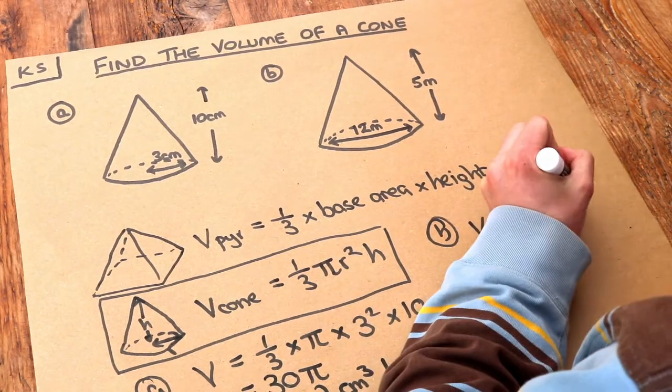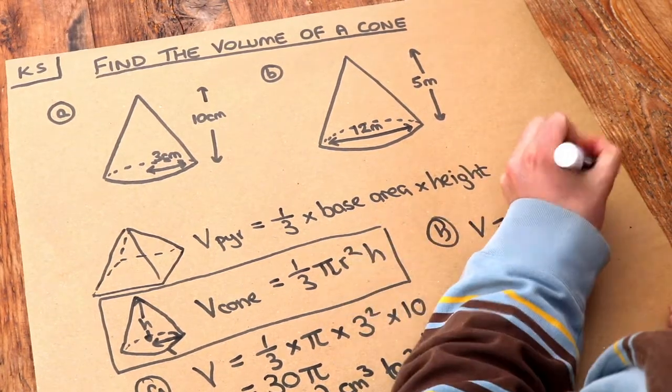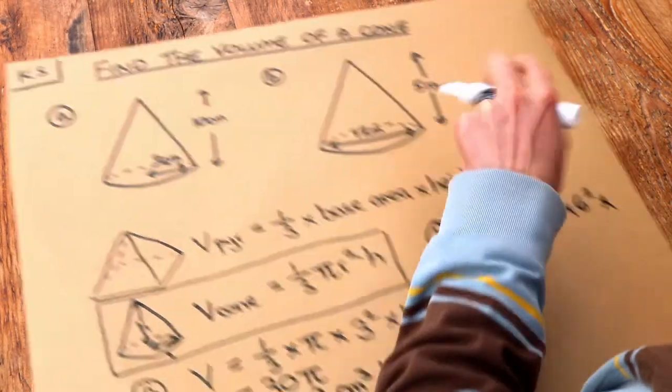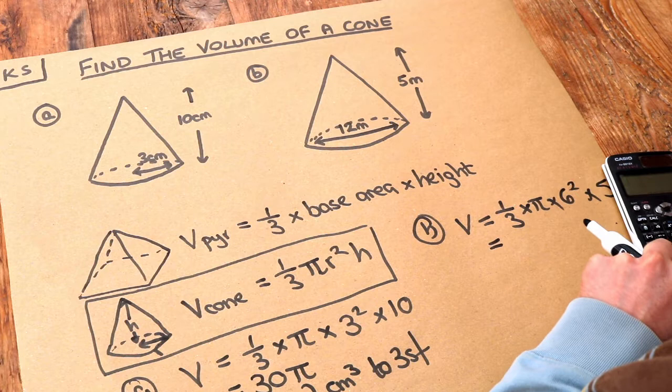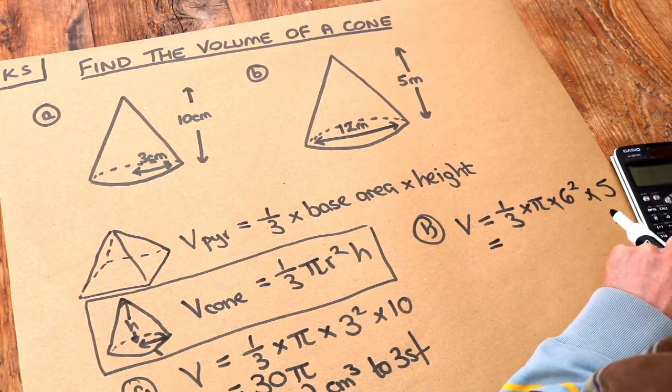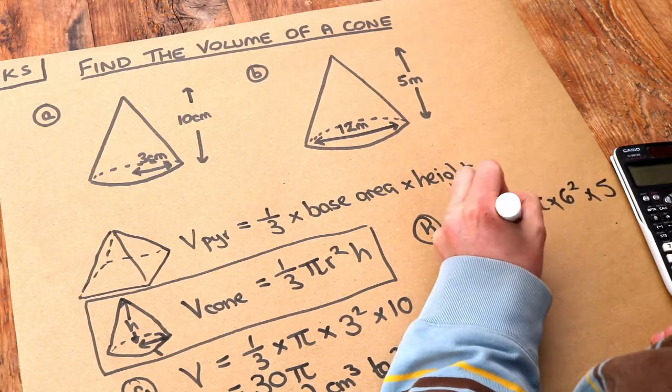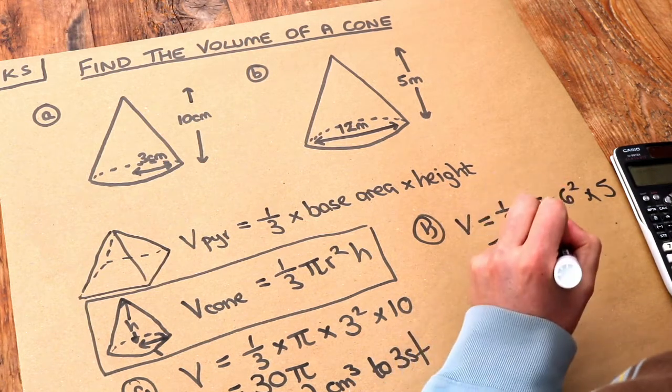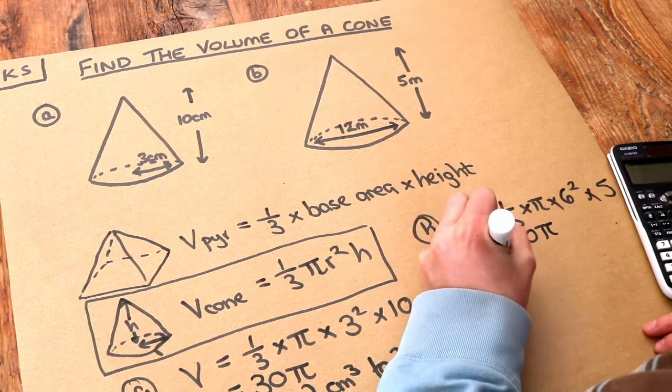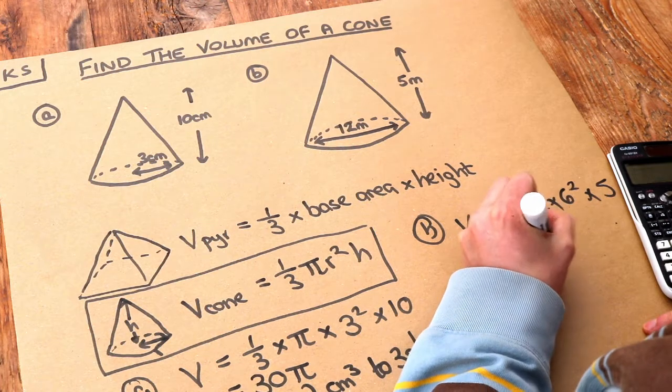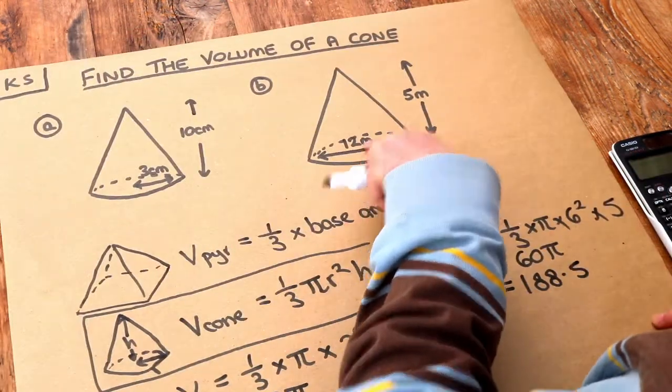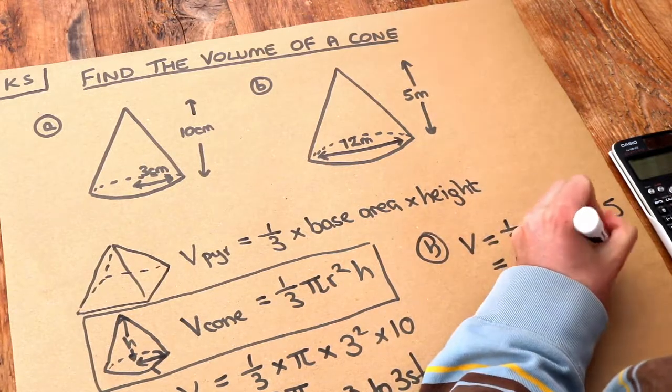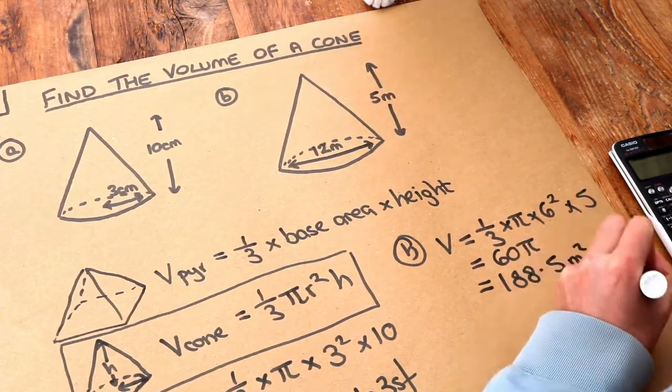do that on our calculator: a third times π times 6² times 5 equals 60π, or as a decimal, if you press the S⇔D key, 188.5 to one decimal place. The unit, since it was in meters, will be meters cubed.